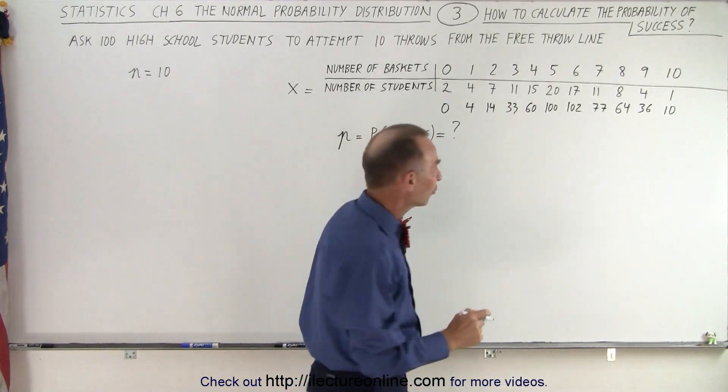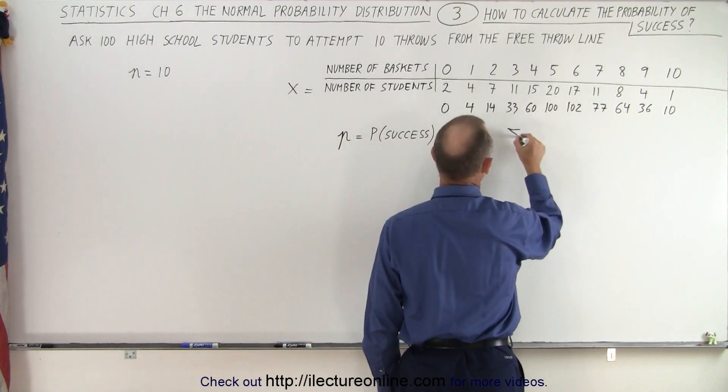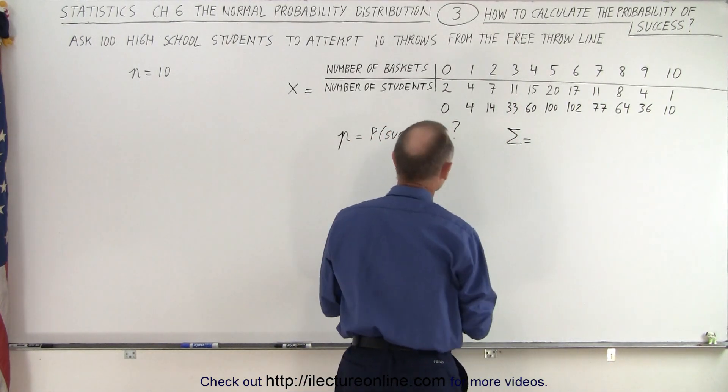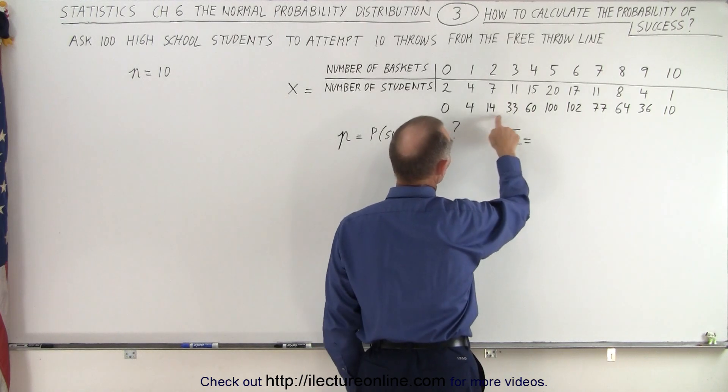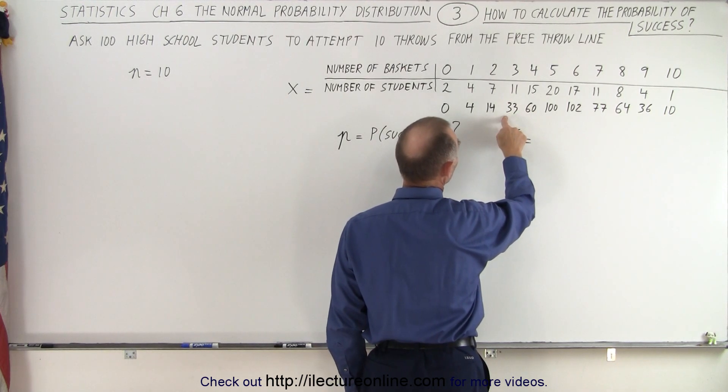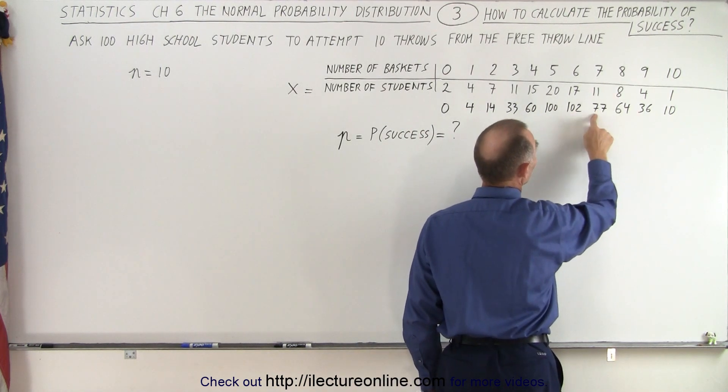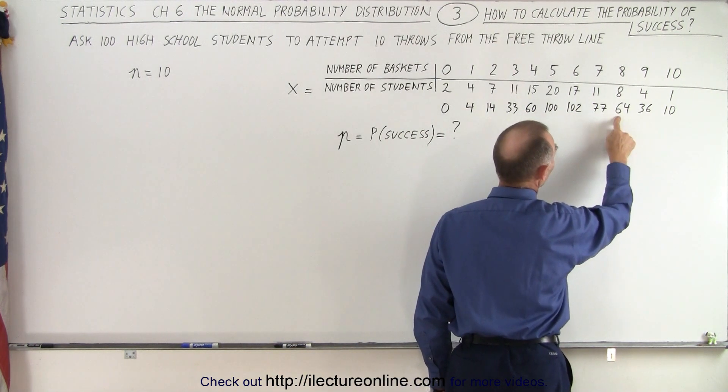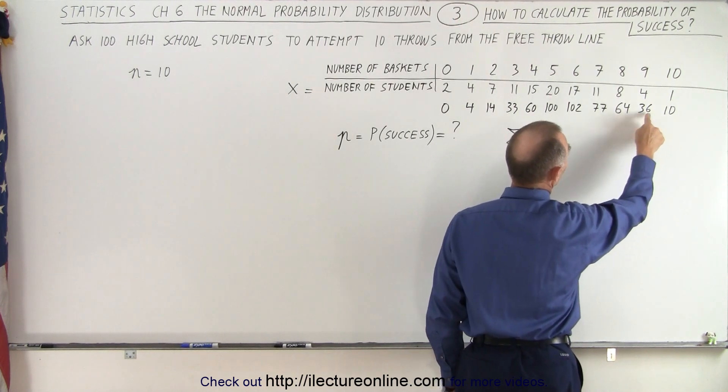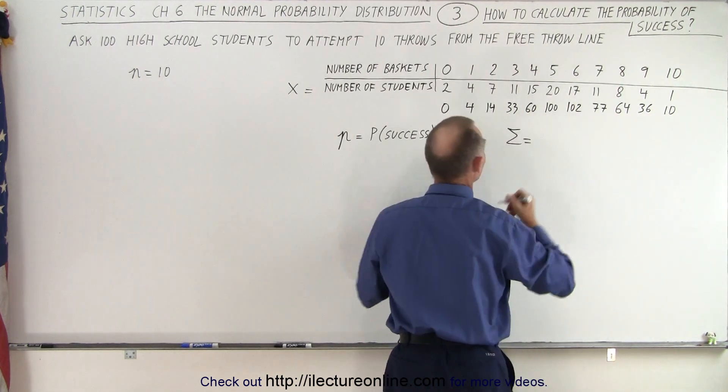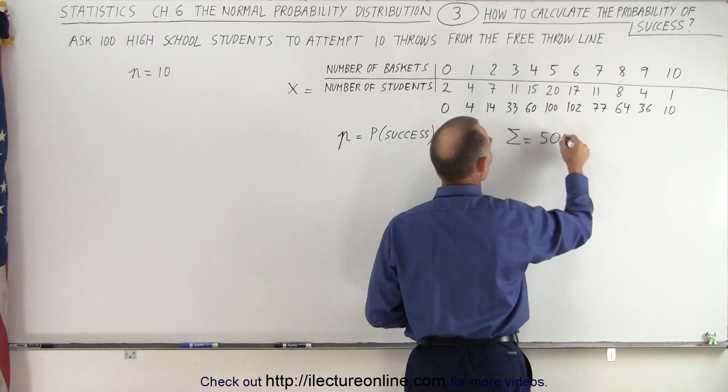Now we're going to add all those numbers together. So the sum is equal to, all right, that's 18, that's 21, that's 51, that's 111, 211, 313, 320, 390, 454, 484, 490, 500 all together. So the sum of those numbers is 500.